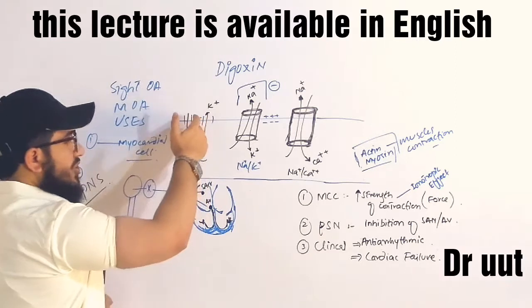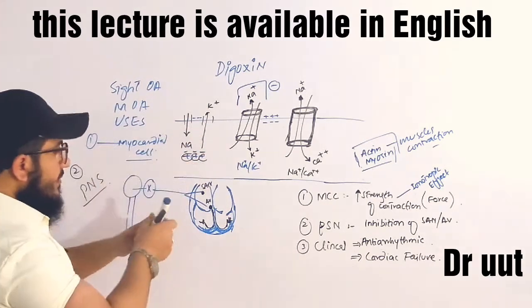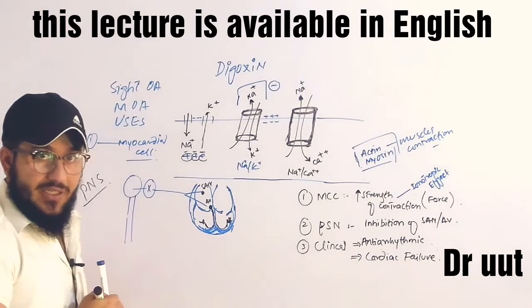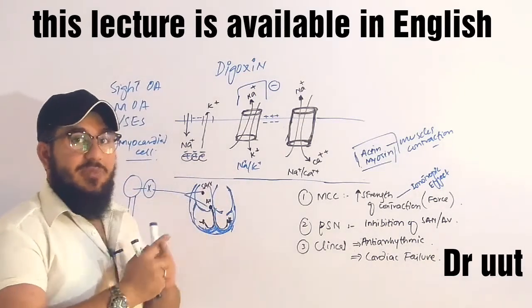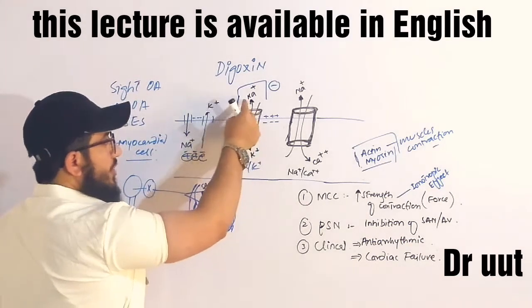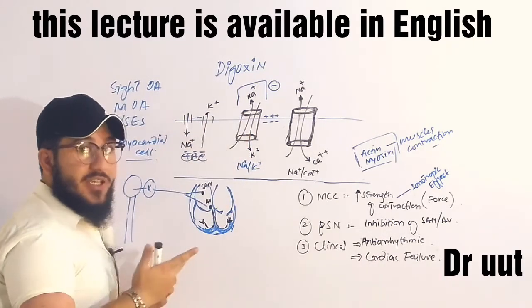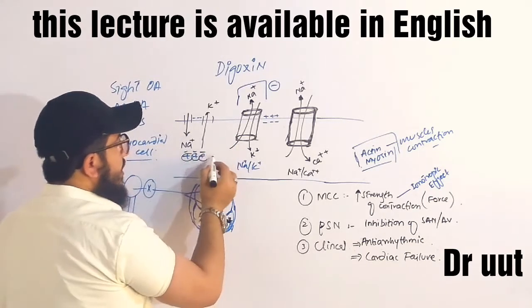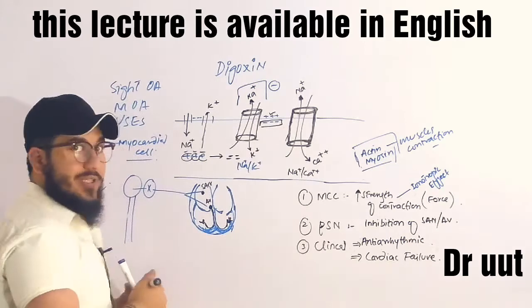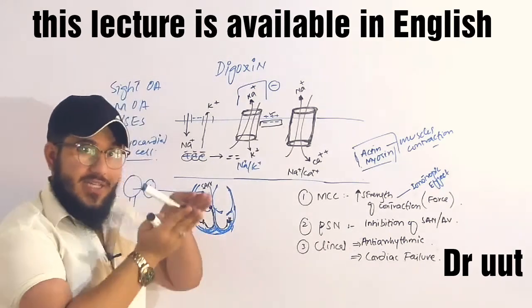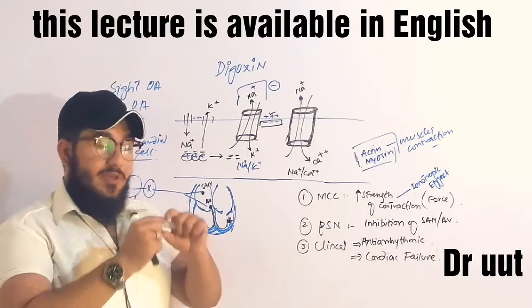Normally when an action potential reaches the cell, the outside will be positive and the inside will be positive — the membrane is excited. In the resting state, the sodium-potassium pump moves sodium out of the cell, so the inside becomes negative and the outside is positive — this is the resting condition.